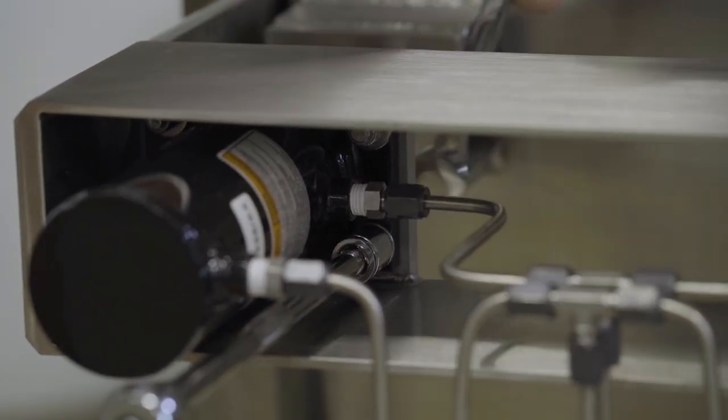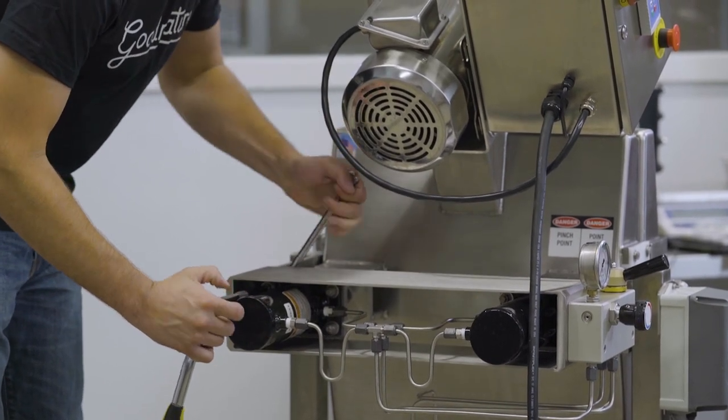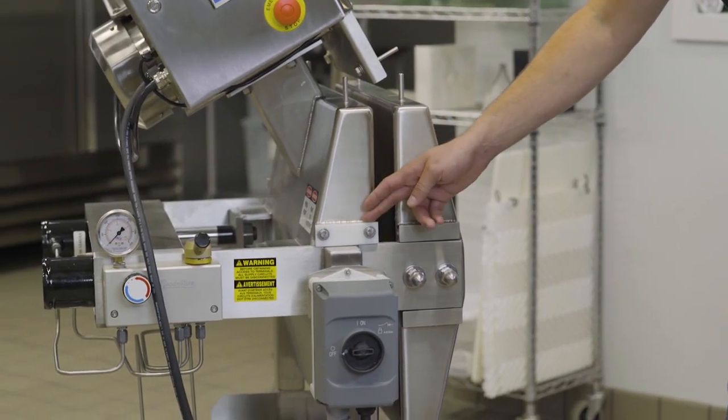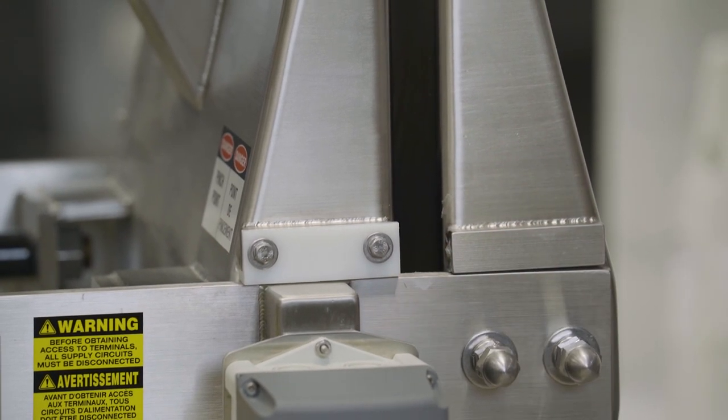The third step is to check the shims on the press to make sure they have no cracks and appear in good shape. Replace as needed.